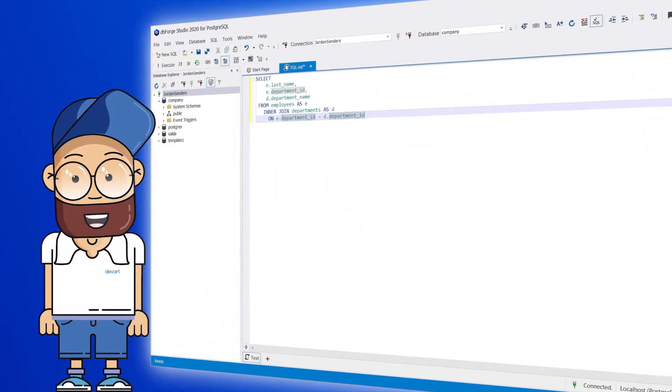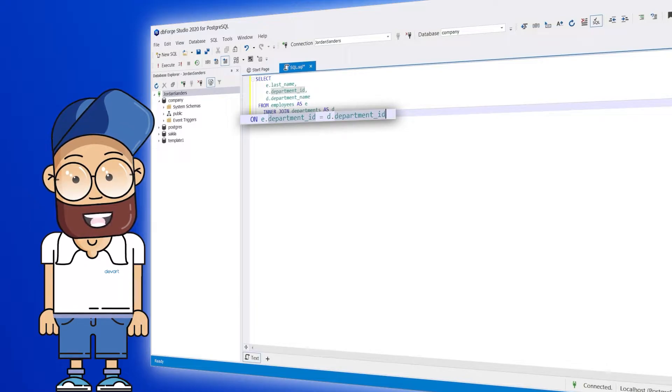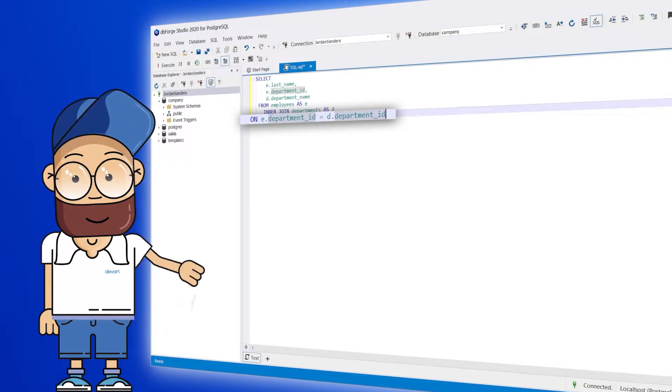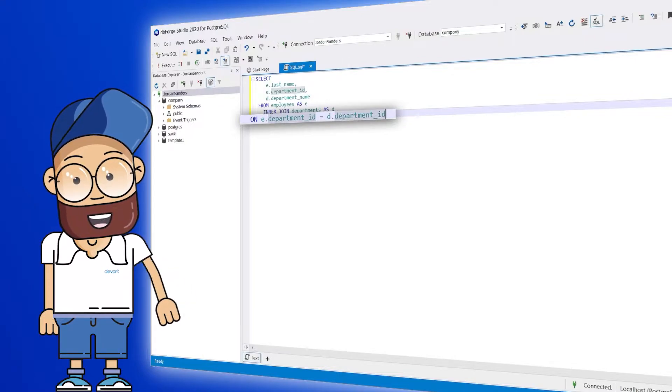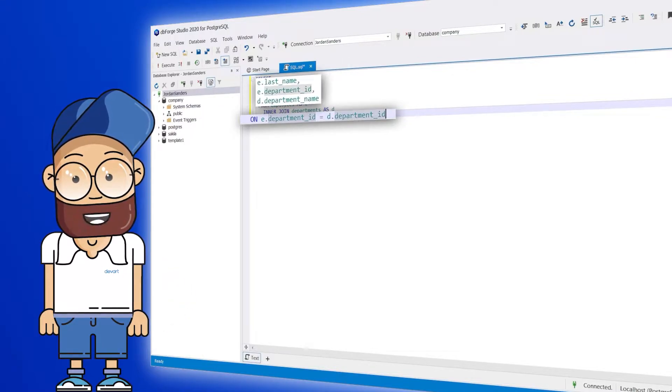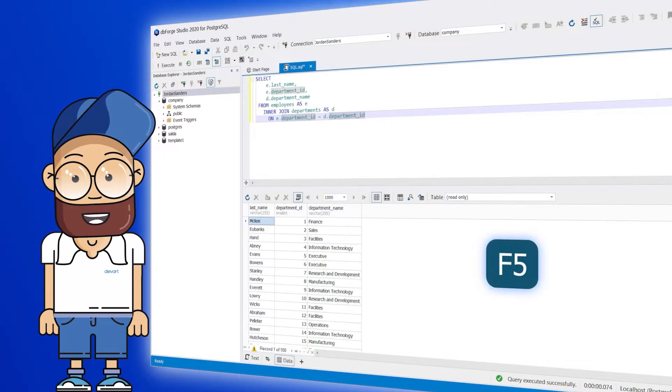Using dbForge Studio for Postgres, we can create a query to join the employee and department tables based on the column department ID that appears in both tables. If the department ID column values of these tables match, the query will join the last name, department ID, and the department name columns into a table result. If the department ID values do not match, the result rows won't be created. Let's check that by running the query.